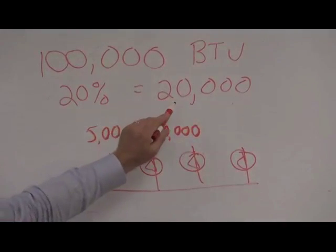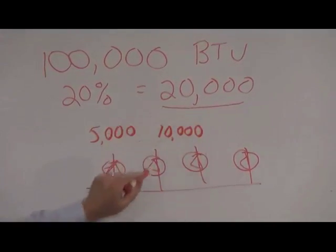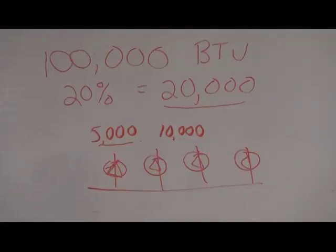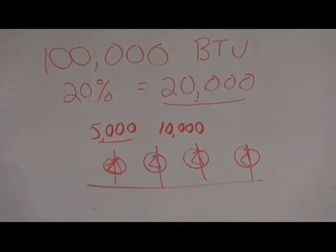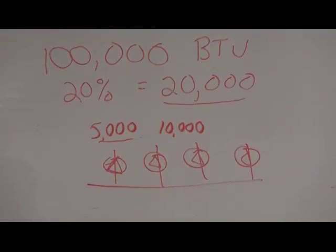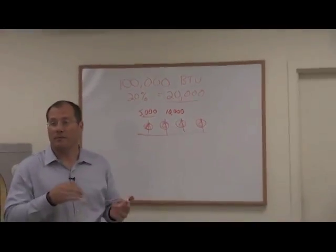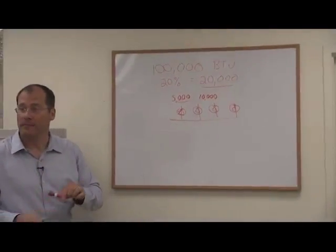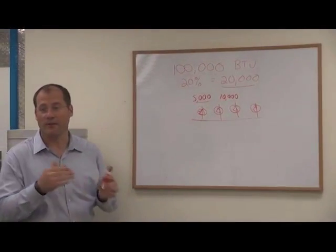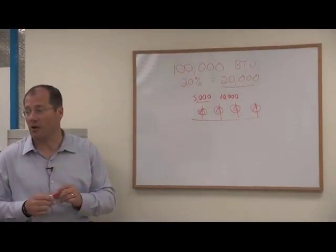And what happens is you have the boiler firing at 20,000, but the room only taking 5 on the coldest day. Maybe on a mild day it's only taking 500 BTUs. So the boiler very quickly reaches temperature because it can't give off enough heat and it turns off. And then it very quickly turns back on. And then it turns off. And then it turns back on. So that process is called short cycling.